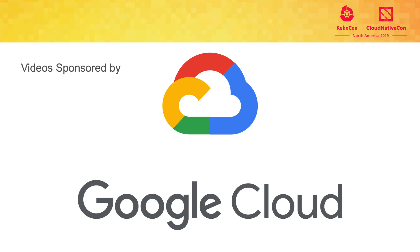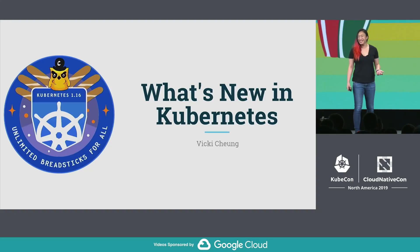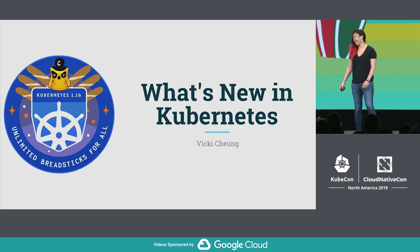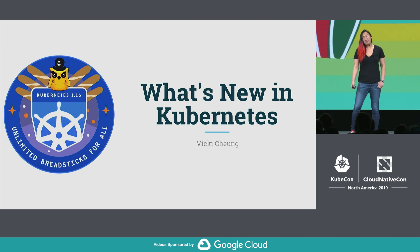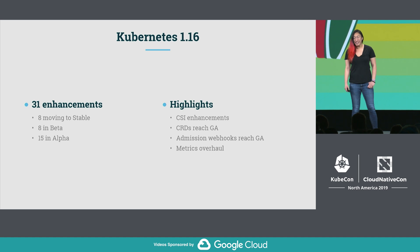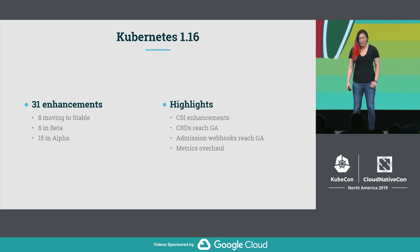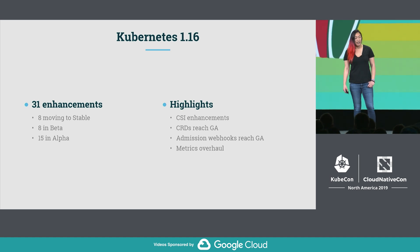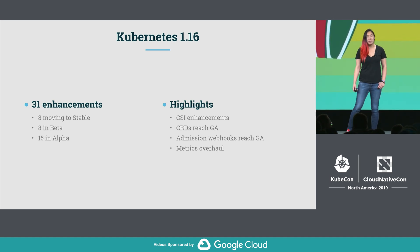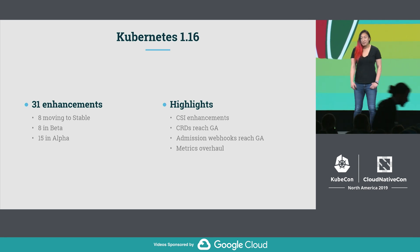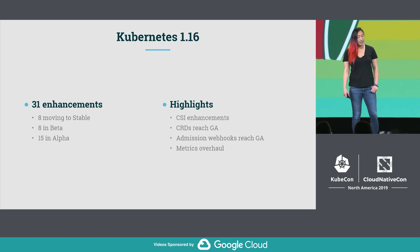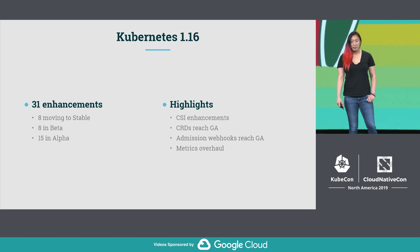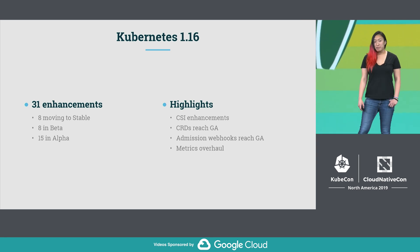I'm going to cover what's new and happening in Kubernetes. Shout out to the release team, who is apparently very fond of this national Italian chain that provides unlimited breadsticks for all. So Kubernetes 1.16 — super exciting. There are 31 enhancements, including 15 new features in Alpha, eight moving to Beta, and eight moving to Stable. Some highlights include a bunch of new enhancements in the storage space, and CRDs and admission webhooks are moving to GA.